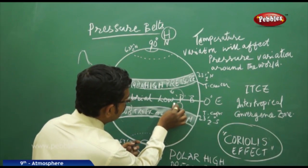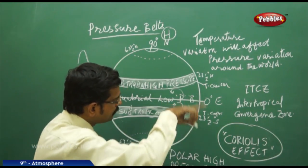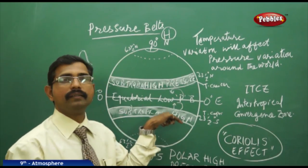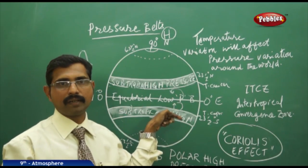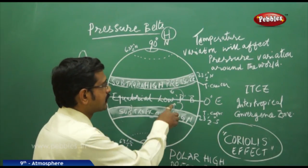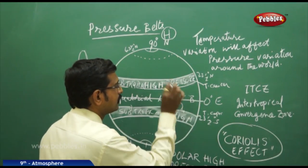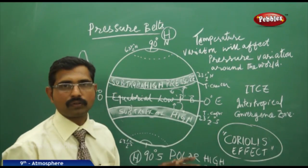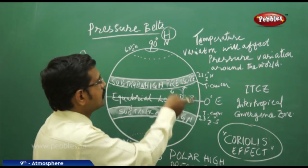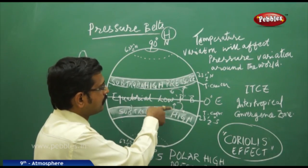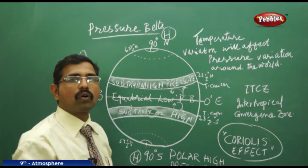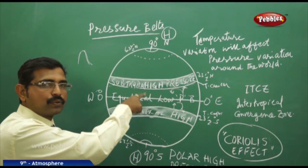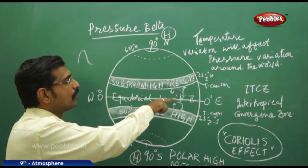Similarly, at the equator, air molecules falling in the nearby southern hemisphere strike the surface and split — one part moving towards south and the other towards north. This creates a cyclic wind pattern called the equatorial cyclic zone, where you get low pressure.